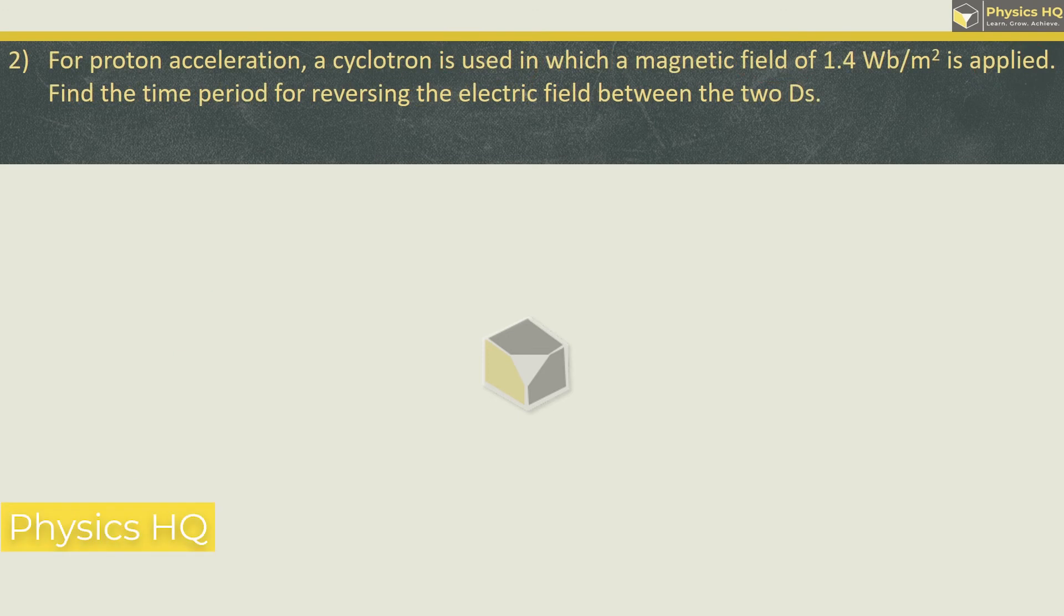Next. For proton acceleration, a cyclotron is used in which a magnetic field of 1.4 Weber per m² is applied. Find the time period for reversing the electric field between the two Ds.